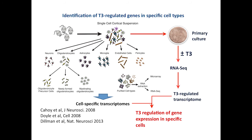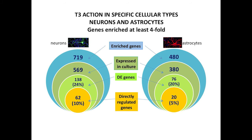To make this simple: we isolated the primary culture and did RNA-seq, so we have the T3-regulated transcriptome. We then crossed our data with cell-specific transcriptomes derived from the same cultures by looking at transcriptomes specific to neurons, oligodendrocytes, astrocytes, microglia, and so on, using published data from other groups. We now have the list of genes regulated by T3 in specific cell types. About 10% of genes regulated by thyroid hormone in neurons are directly responsive to T3, and about 5% of genes in astrocytes are directly regulated by T3.